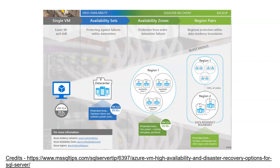If you have two VMs and one is on a different rack space, then due to a network failure or power outage on that particular rack, your second server is still running. This automatically increases the SLA to 99.95%.